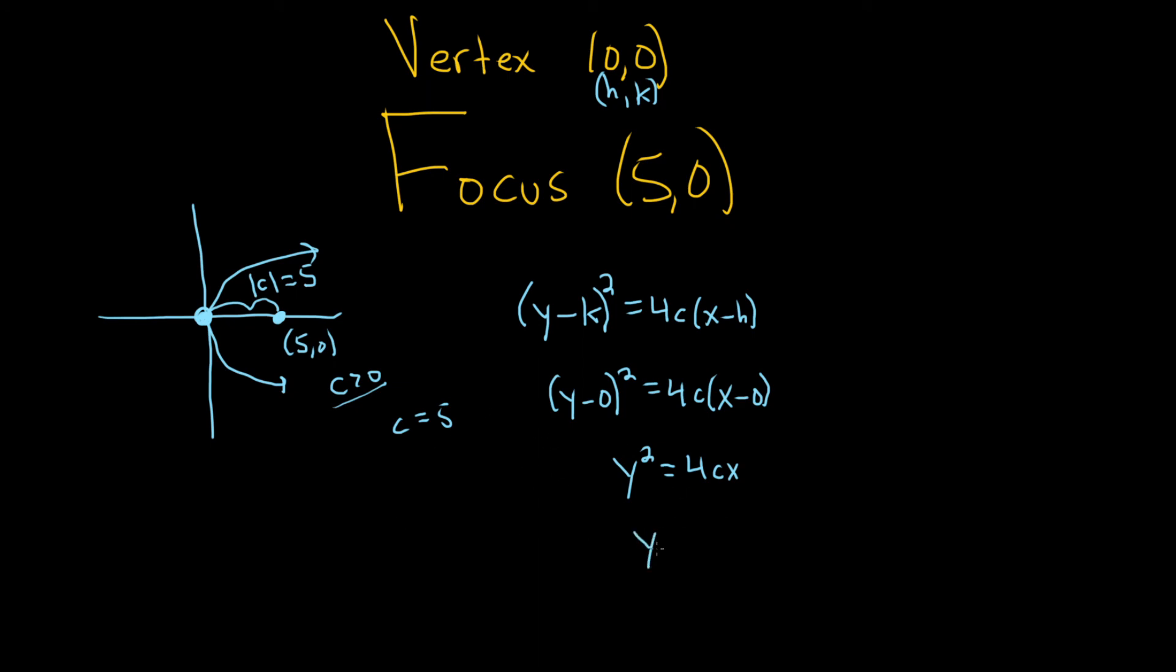So now we just take the 5 and plug it in. So y² is equal to 4 times 5 times x. So y² = 20x. And that would be the equation of the parabola. I hope this video has been helpful.